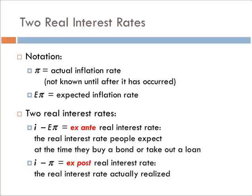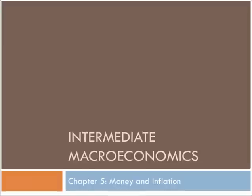The first one is called the ex-ante real interest rate. That's the real interest rate people expect at the time they buy a bond or take out a loan. We have to put in this future expectation of inflation, and there are several different ways to do it — a forecasting model, a heuristic model, or simply assuming inflation will be what it was last period. That concludes our discussion of the real interest rate.